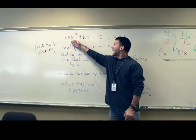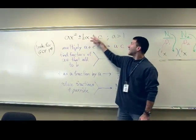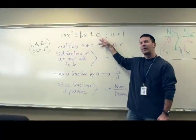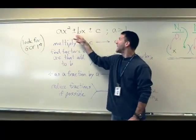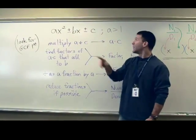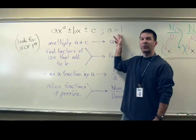The trinomial ax squared plus or minus bx plus or minus c. The main variable is x. The a, b, and c will be numbers, but your a coefficient must be greater than one.